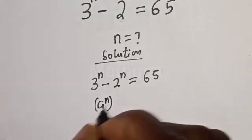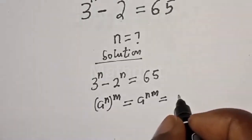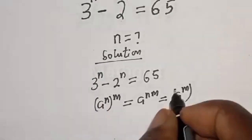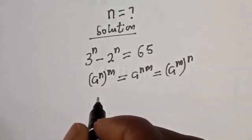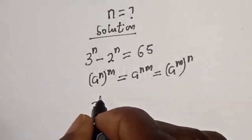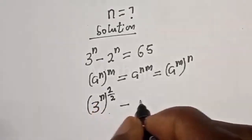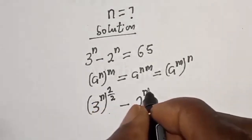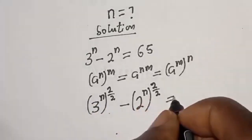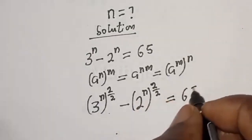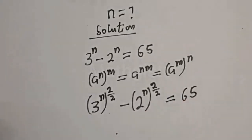Recall that A raised to the power n to the power m equals A raised to power n·m, which equals A raised to power m to the power n. Now, let's add a trick here. We rewrite this as 3 raised to power n over 2, all squared, minus 2 raised to power n over 2, all squared, equal to 65. This does not change the exponent because 2 divided by 2 gives 1.